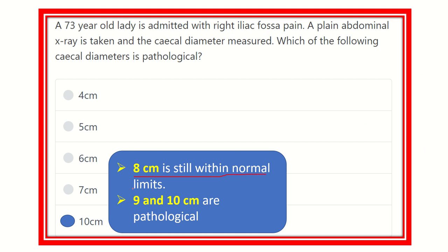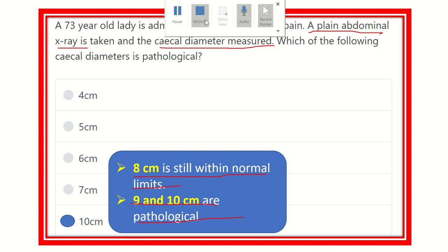Nine centimeters and ten centimeters are both pathological. On a plain abdominal X-ray, the cecal diameter should be within eight centimeters to be considered normal. If it is more than eight centimeters — that is, nine centimeters or greater — then it is pathological for the patient. Therefore, the answer here is ten centimeters.